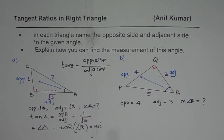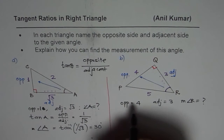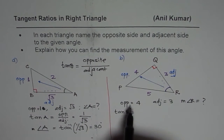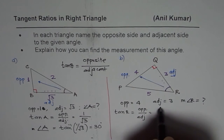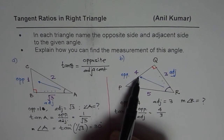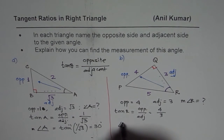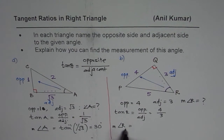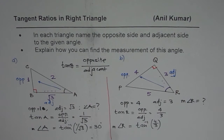So angle A is 30 degrees — that is how you can find the angle in a right triangle using the tangent ratio. I'd like you to pause the video and answer the next one yourself. Tan of R should equal opposite over adjacent. Opposite to R is 4 and adjacent with the 90 degrees is 3, so tan R equals 4 over 3. Therefore, the measurement of angle R equals tan inverse of 4 over 3. Use your calculator to find the answer.